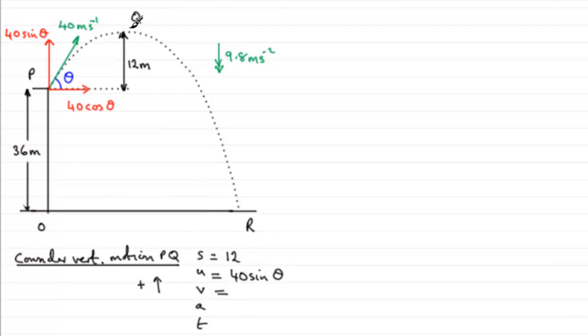As for v, the final velocity at Q, in the vertical sense it's going to be 0 because it's going to come to instantaneous rest. And the acceleration acts downwards, so it's going to be in the negative sense: acceleration due to gravity g, so that would be minus 9.8.